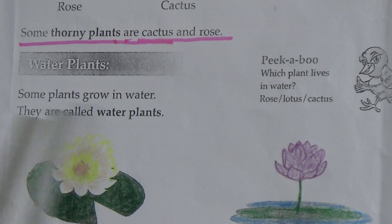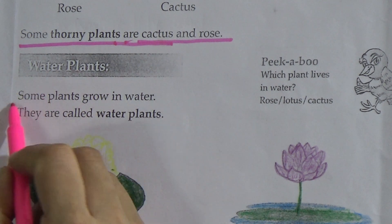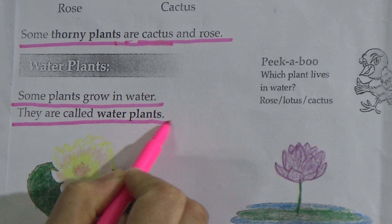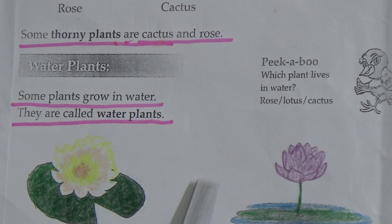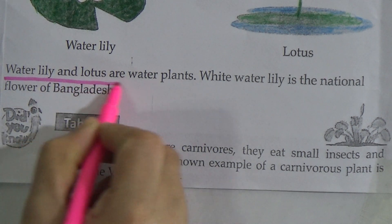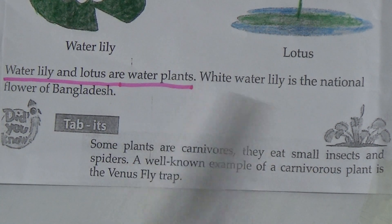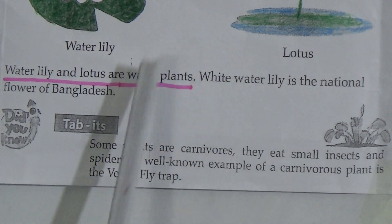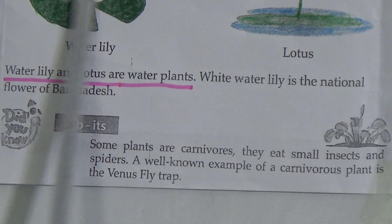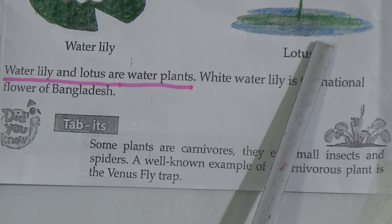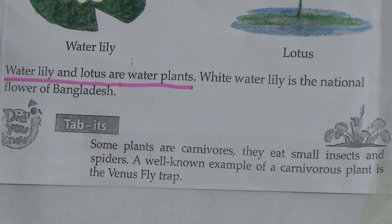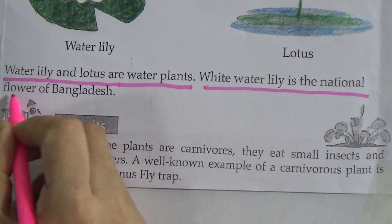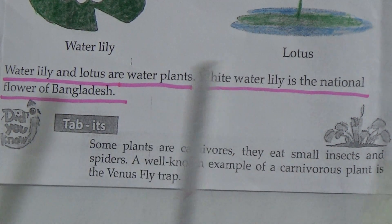Water plants: some plants grow in water and they are called water plants. Water lily and lotus are water plants — underline this line, it is very important. See this figure: this is water lily and this is lotus. White water lily is the national flower of Bangladesh.